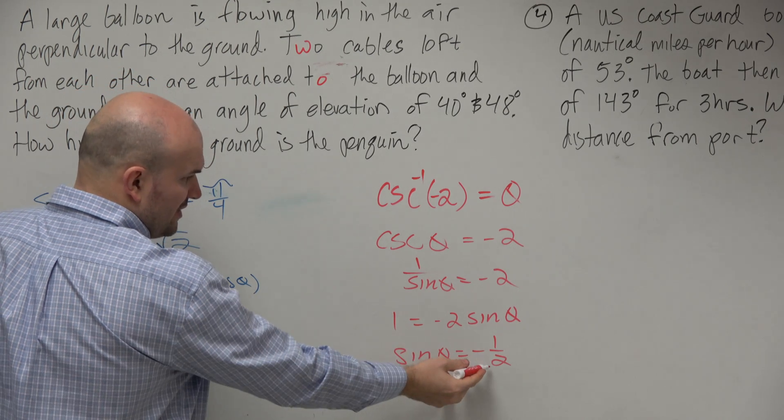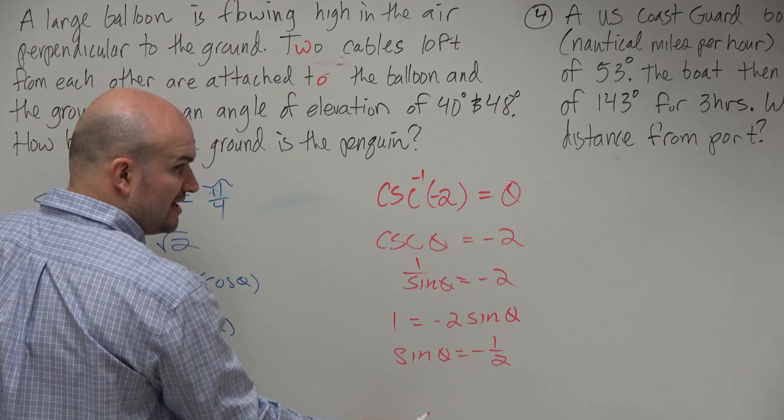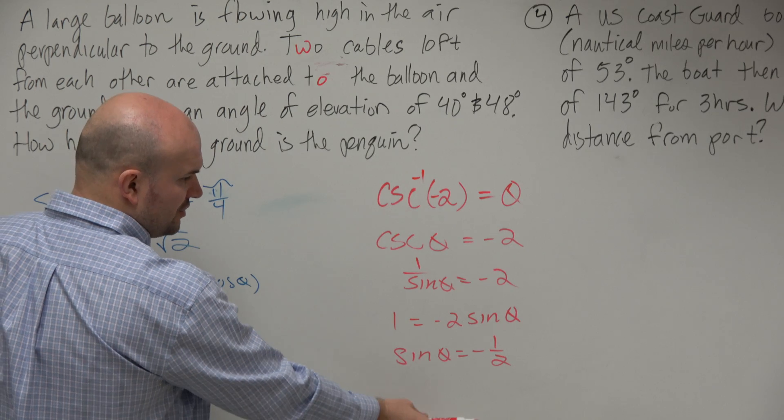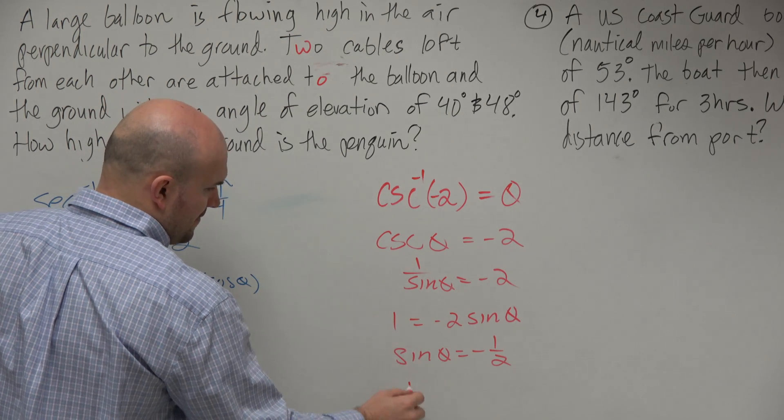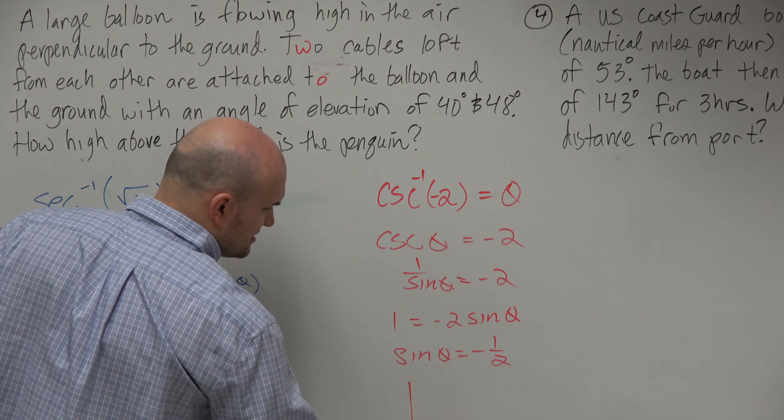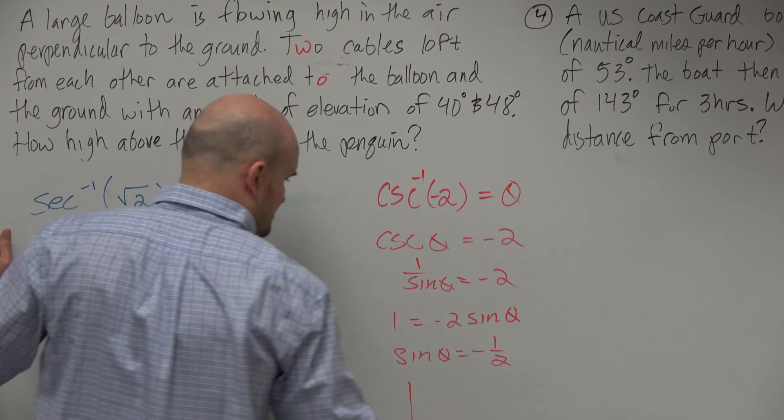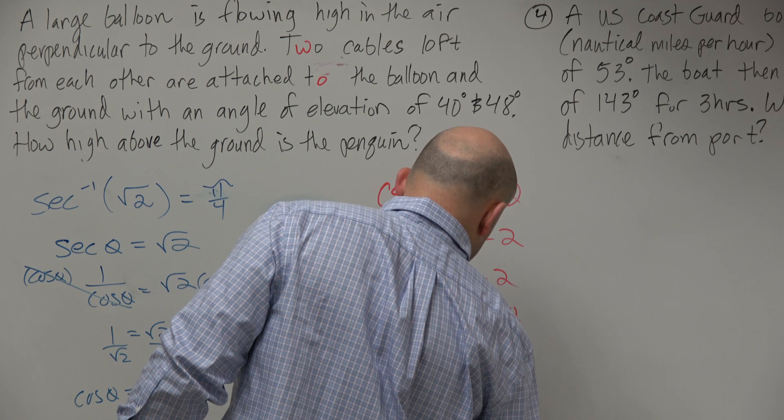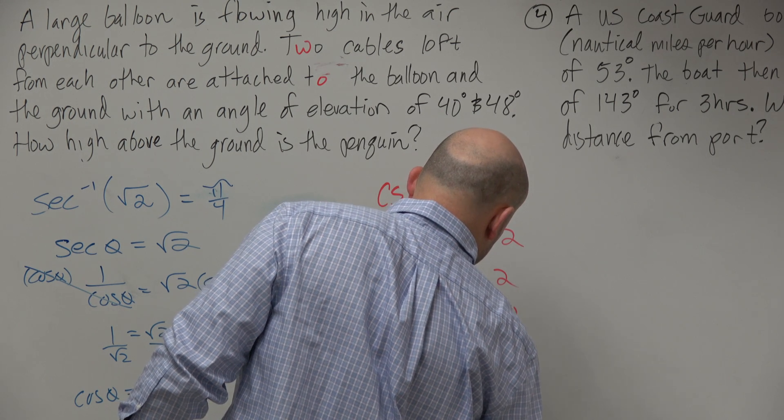So this angle is negative 1 half. You have two points in the first and the third quadrant. It's only going to be in the third quadrant. And we can see that this angle is right there, which is positive square root of 3 over 2, comma negative 1 half.